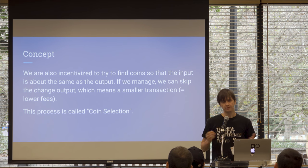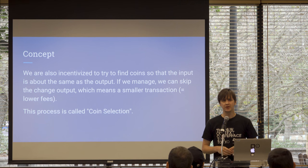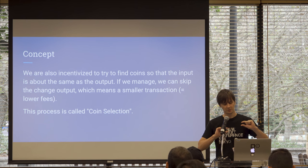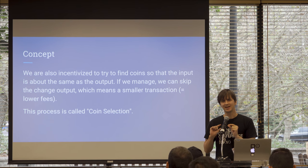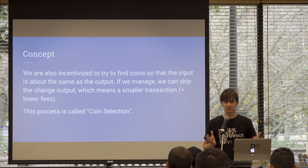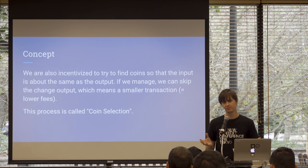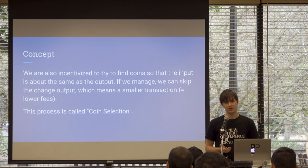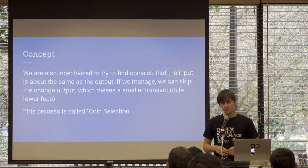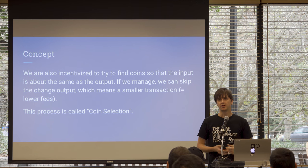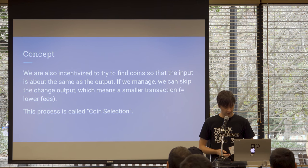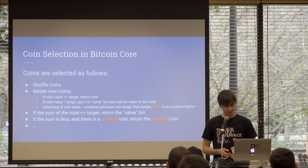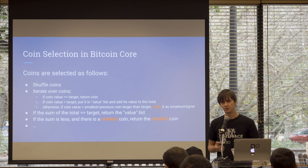If we can find coins that match exactly the amount we want to send, that's also great, because that means we can skip the change output, which makes for a smaller transaction as well. So this whole process is called coin selection, and I'll go through how it works in Bitcoin Core now.